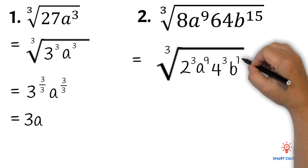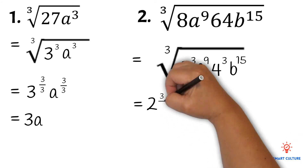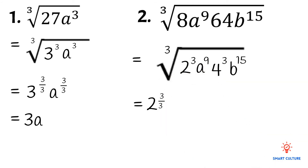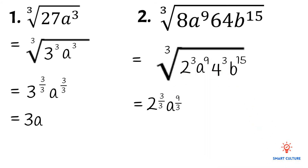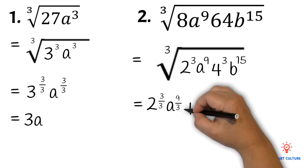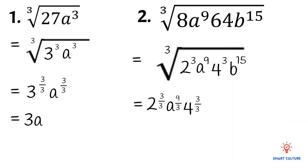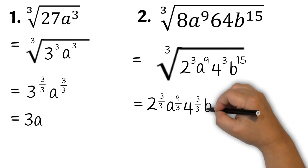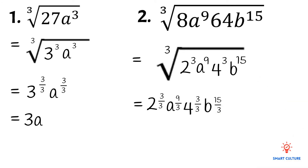Now we'll change this root to fractional exponents. We write 2 to the power of 3 divided by 3, then a to the power of 9 divided by 3 since the exponent of a is 9, then 4 to the power of 3 divided by 3, and b to the power of 15 divided by 3. For the 2: 3 divided by 3 equals 1, so we only write 2.